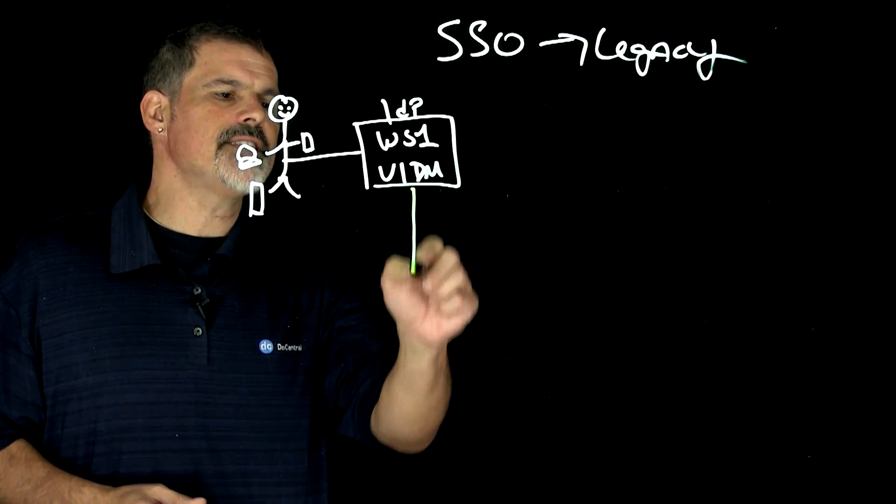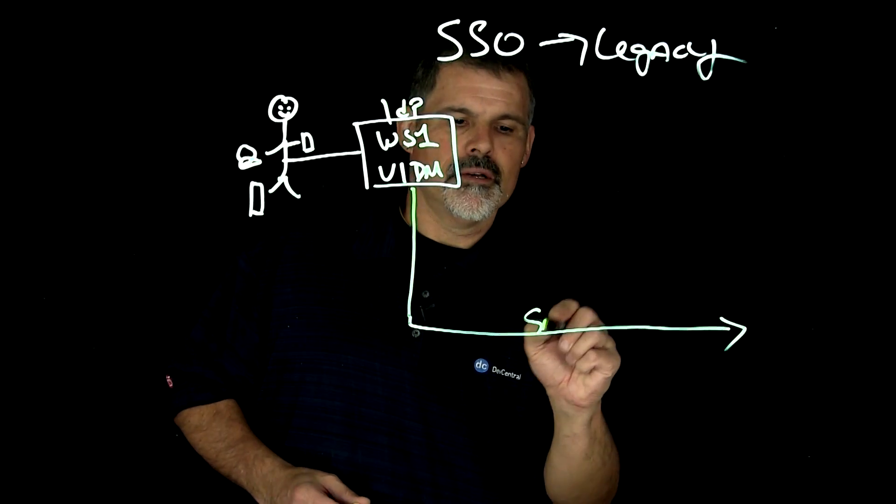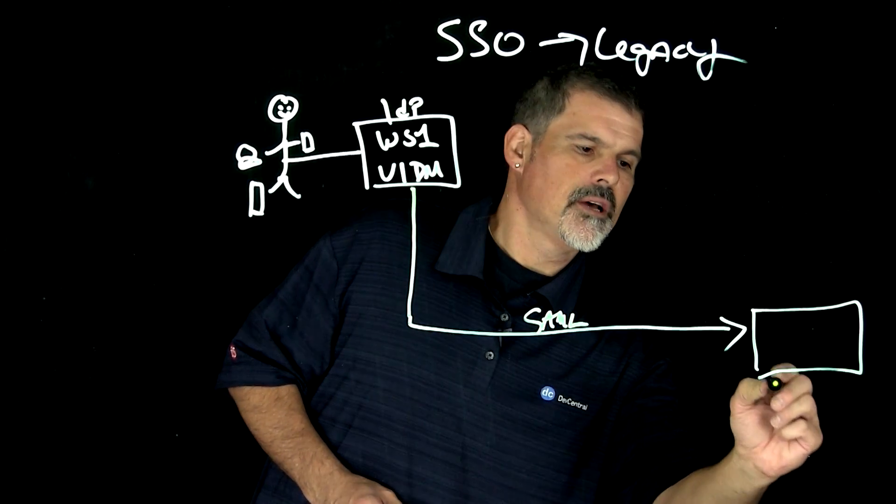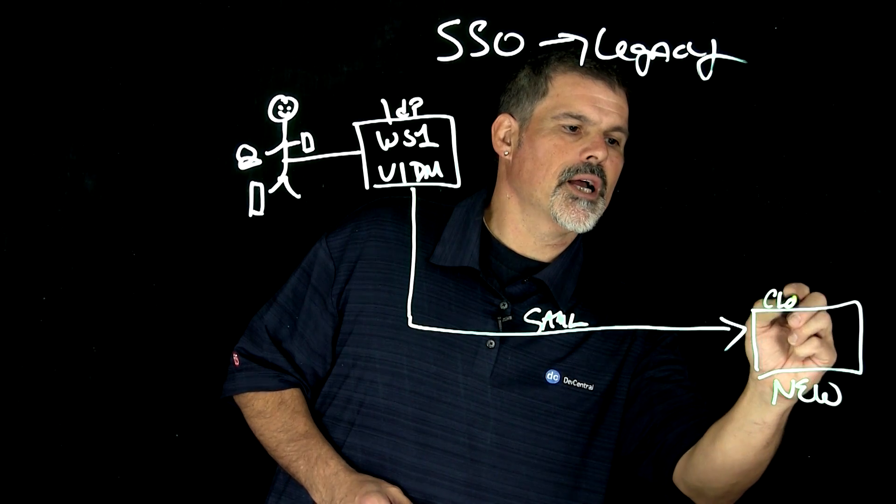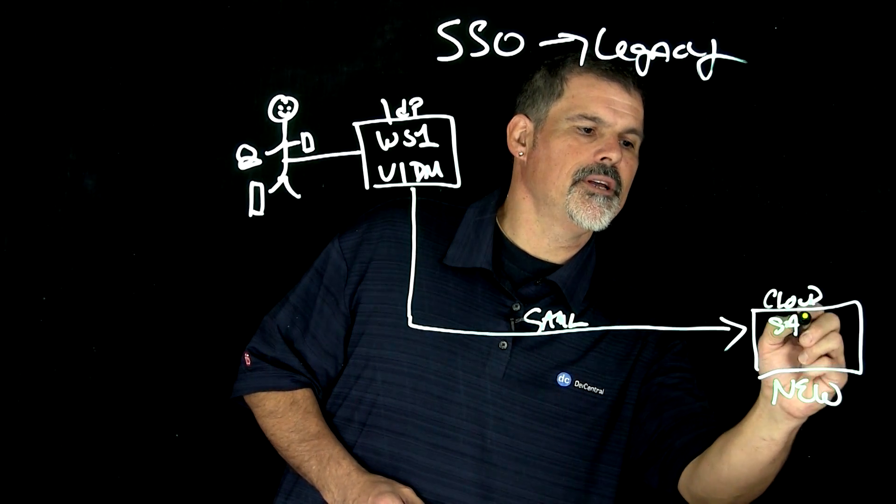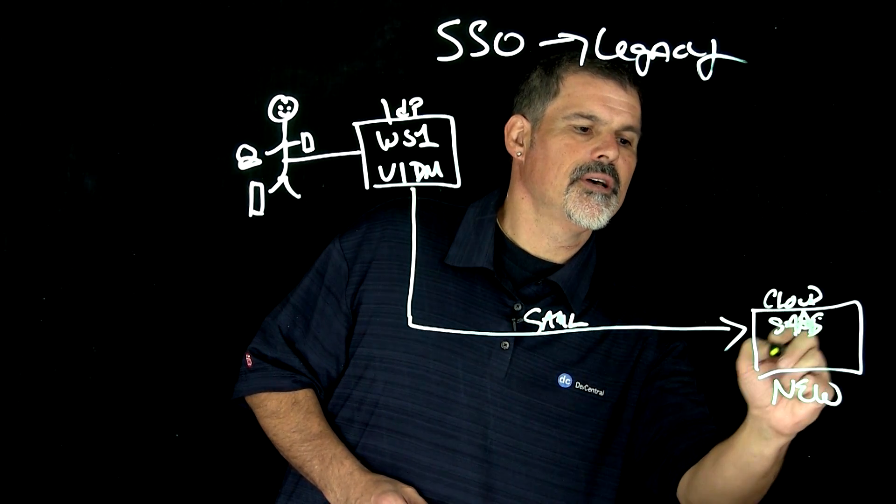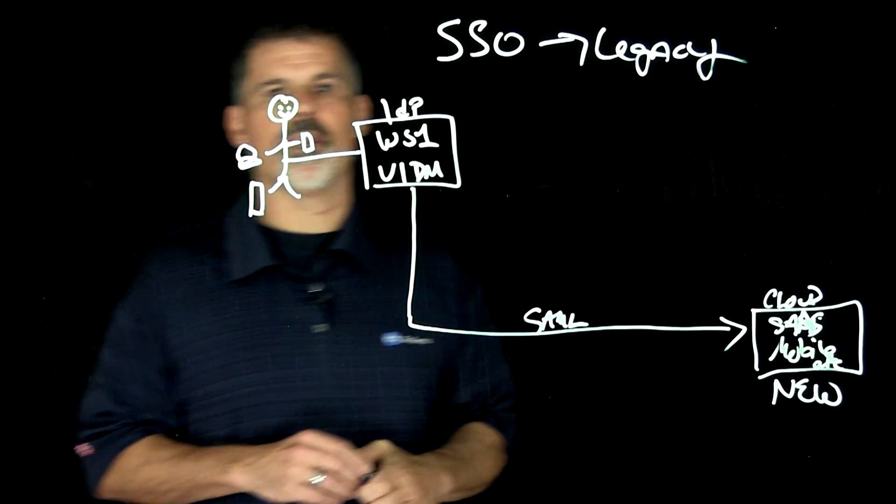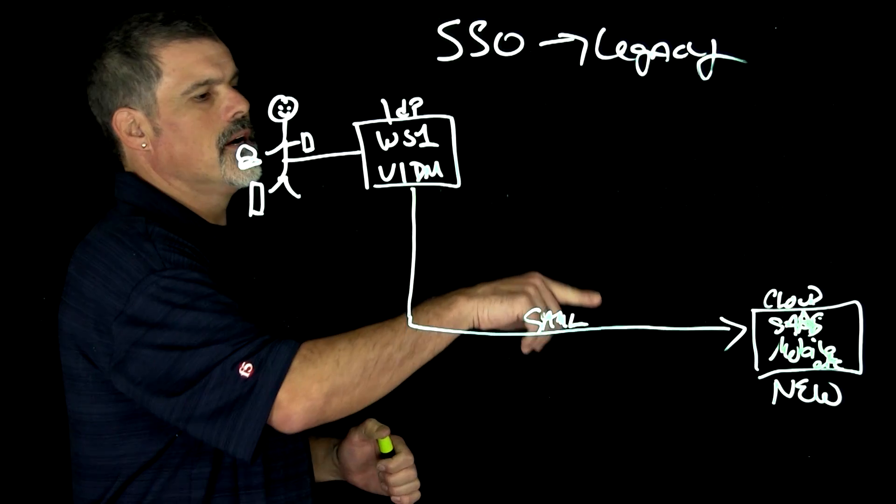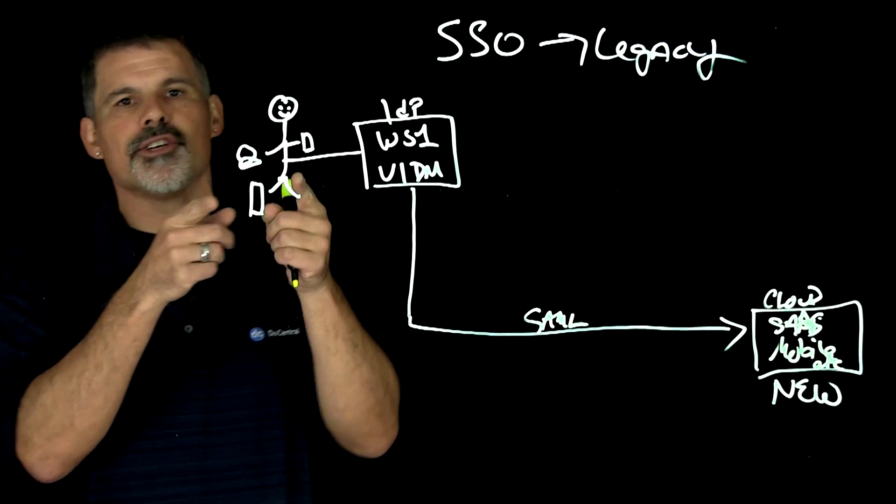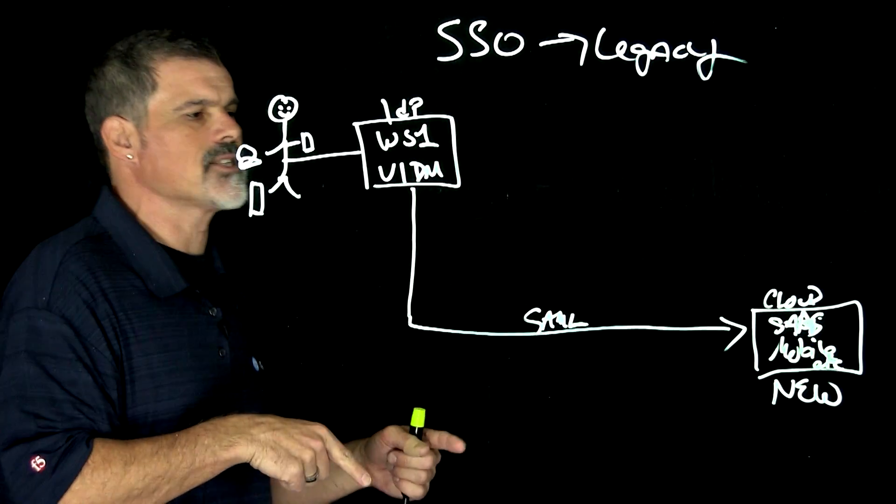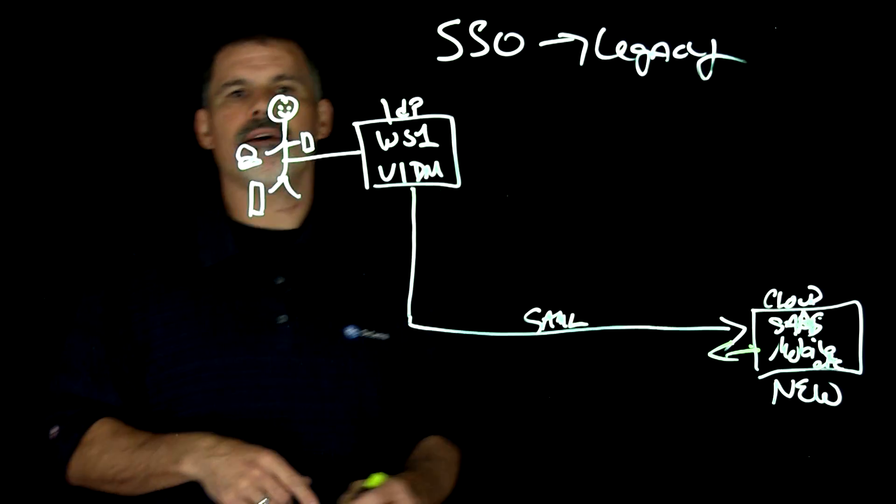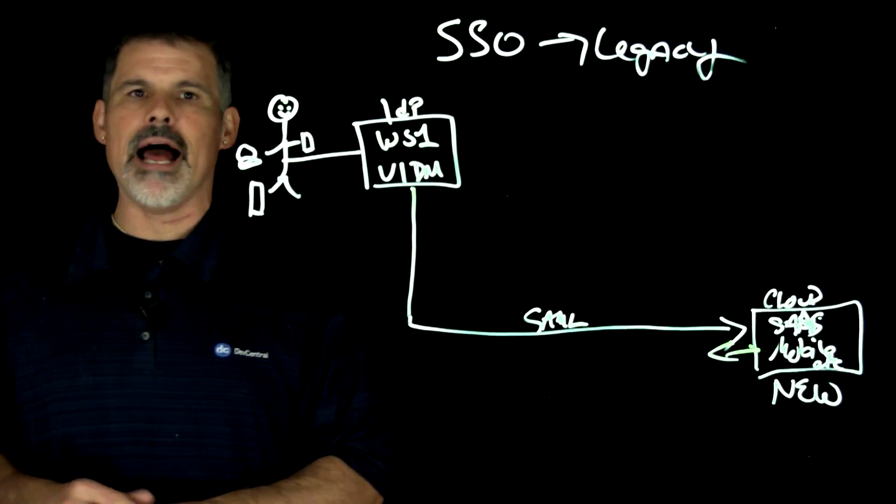And so in this instance, VMware's Identity Manager will authenticate the user via SAML. They'll then send that SAML assertion to the cloud, SaaS, mobile, etc. So they'll send the SAML assertion, the SAML token to the SaaS application, letting it know this is who they say they are and they gain access to these certain applications. And once that occurs, then the user gets access to those cloud applications.